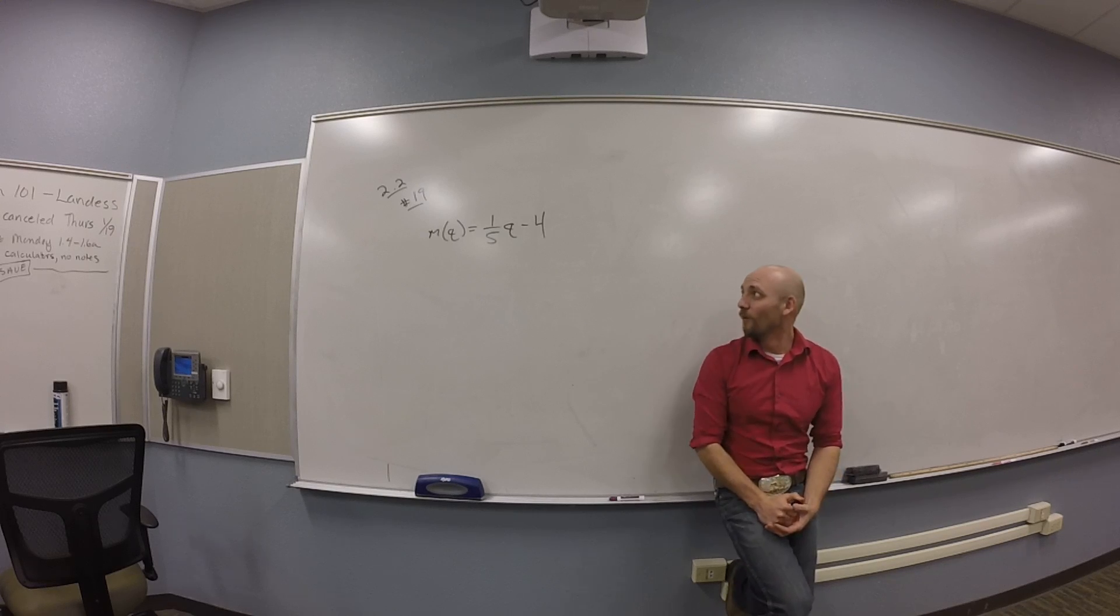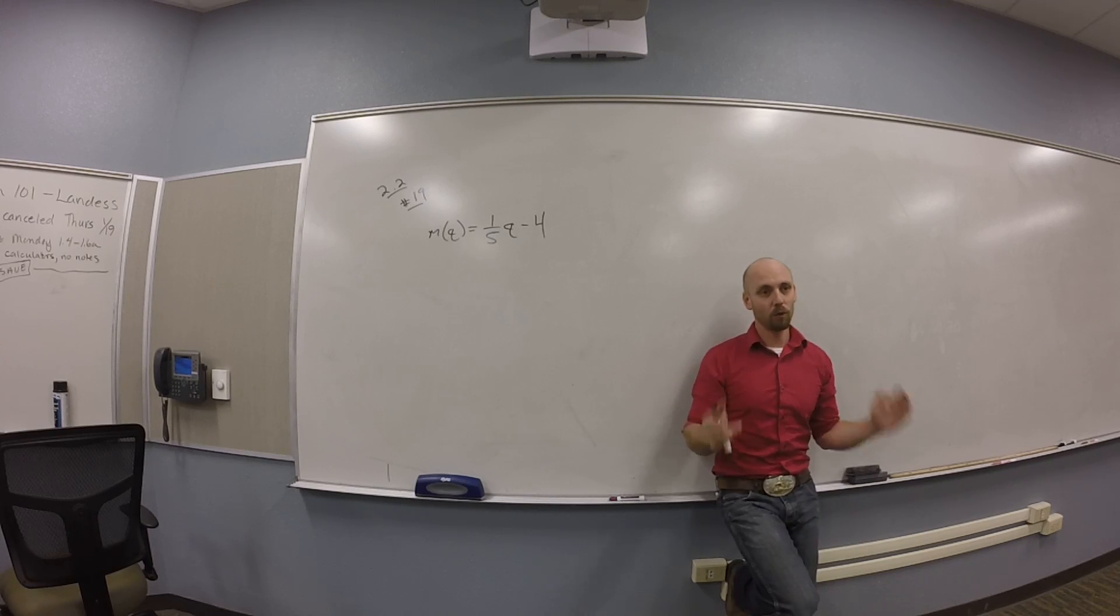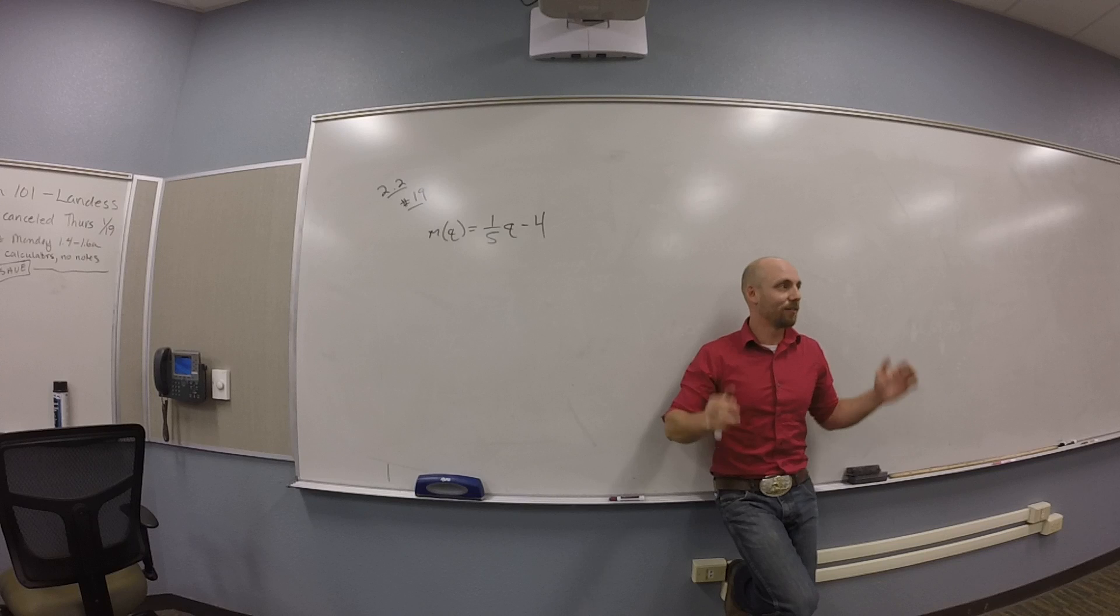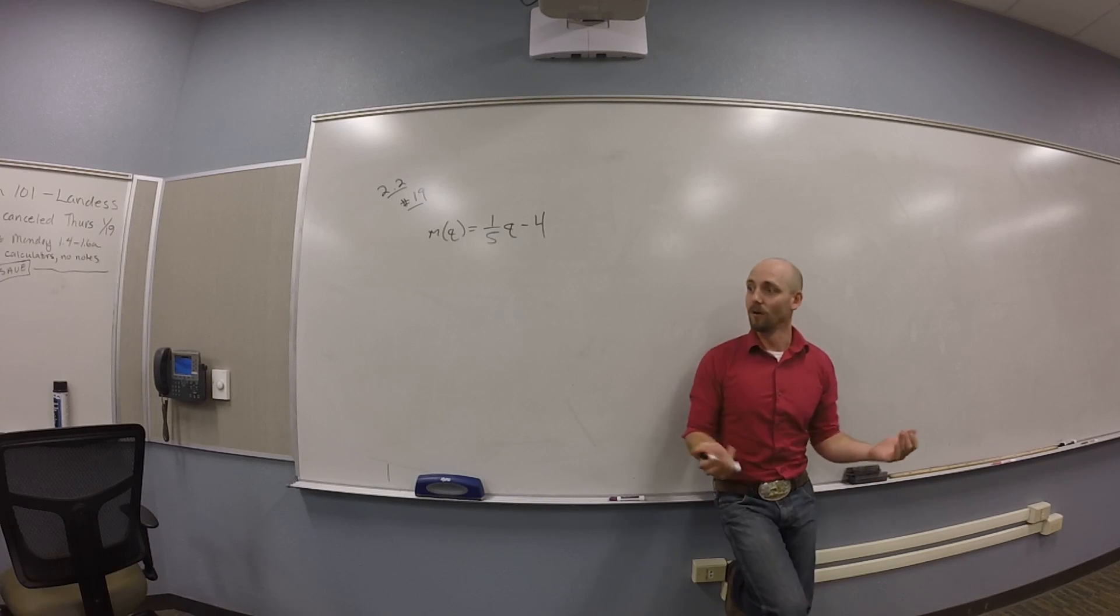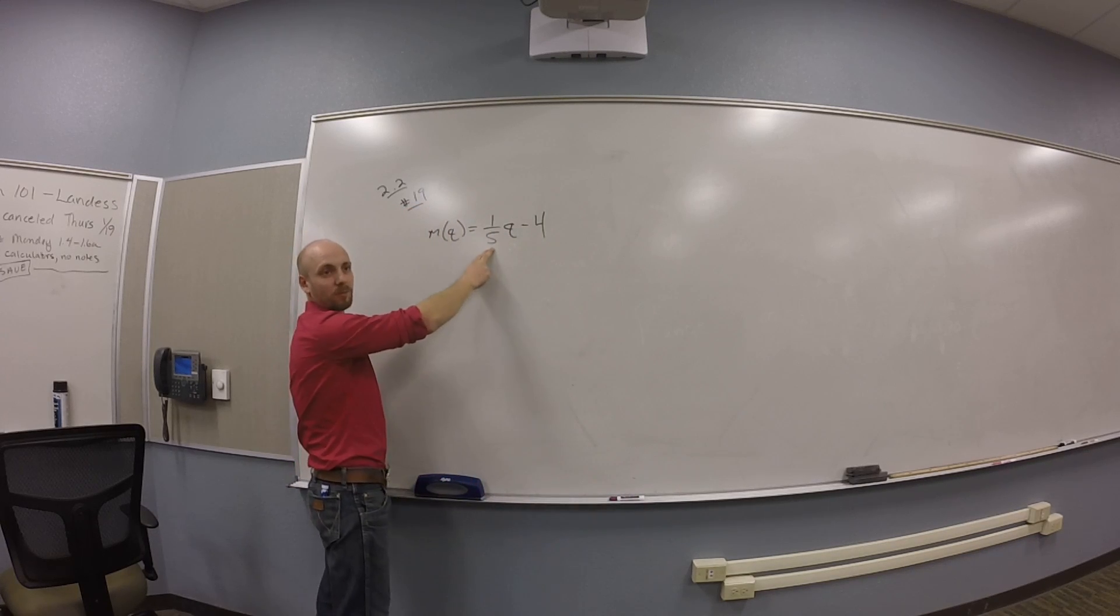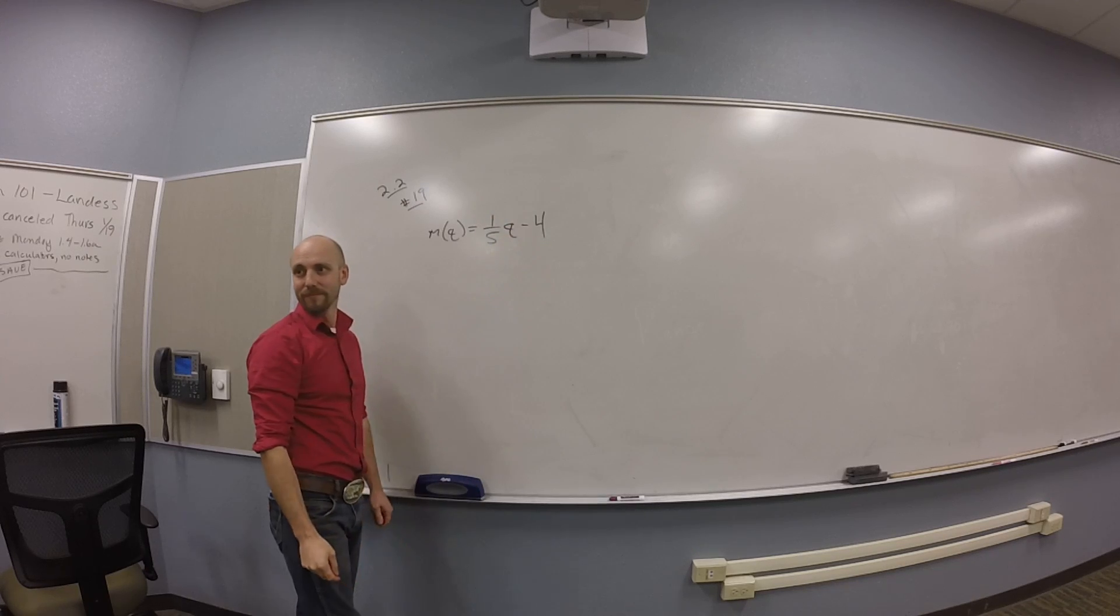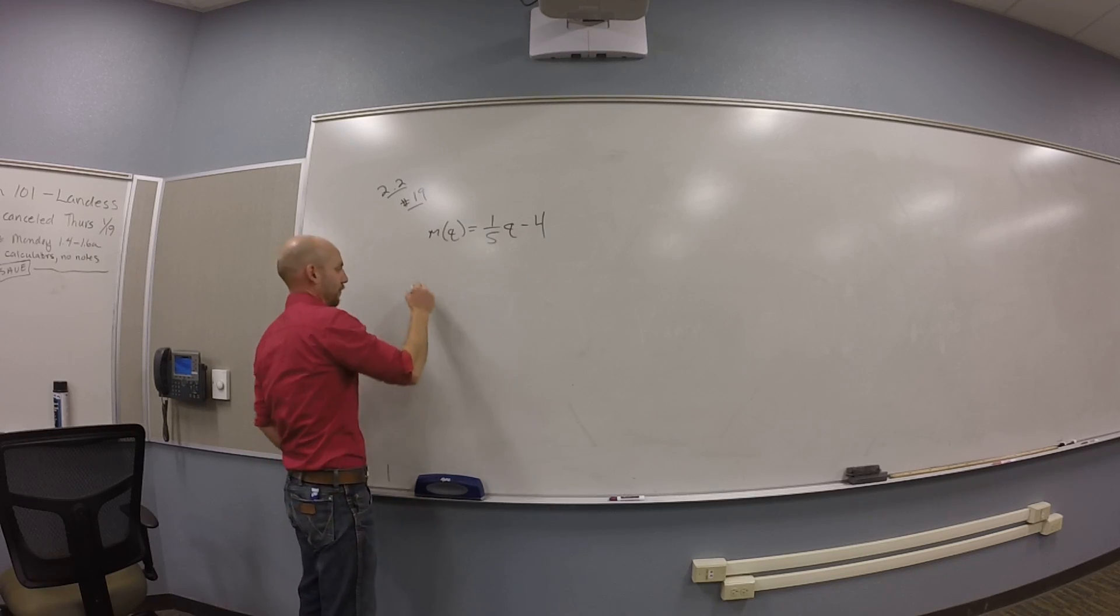So what do I do with this? How do I find the domain and range? What am I looking for? I'm looking for domain things, right? I'm looking for things you're not allowed to map with. So if I think about putting a q in here, are there any q's that I'm not allowed to multiply by 1 over 5? No. 1 over 5 is totally allowed. Are there any 1 over 5 q's that I'm not allowed to subtract 4 from? No. No problems.